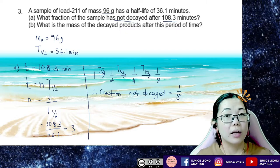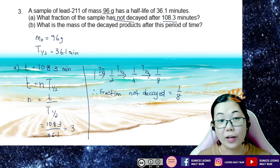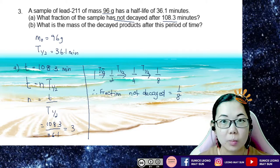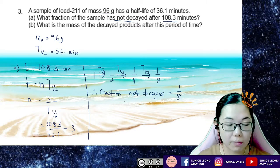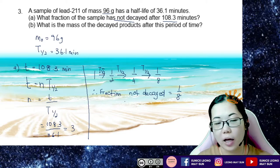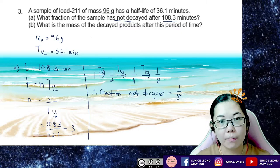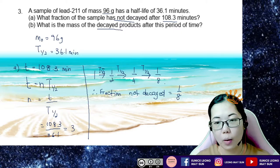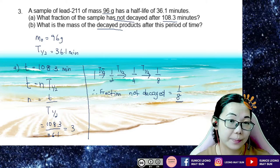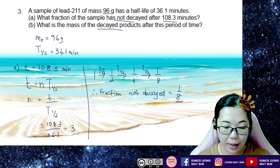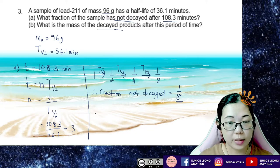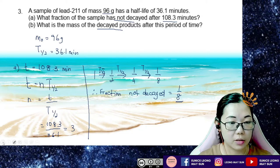This is the only chapter where we can leave the answer as a fraction; in physics normally we are not allowed — it has to be in decimal places. Question B asks: what is the mass of the decayed product after this period of time? So 1/8 is the fraction that has not decayed, and we want to know the mass that has decayed.